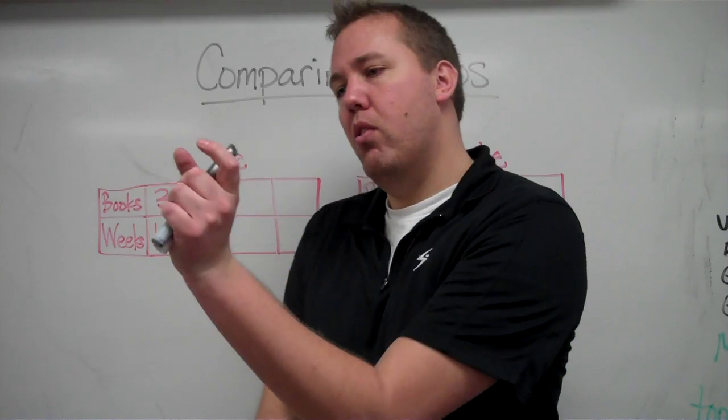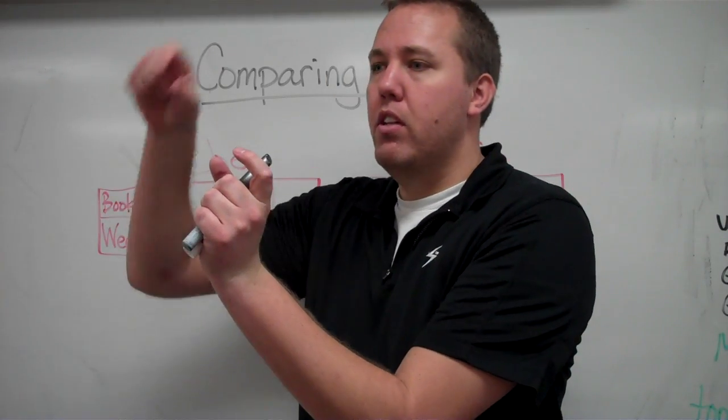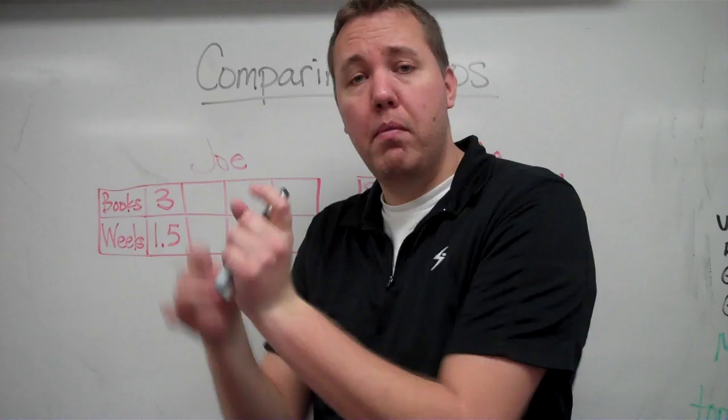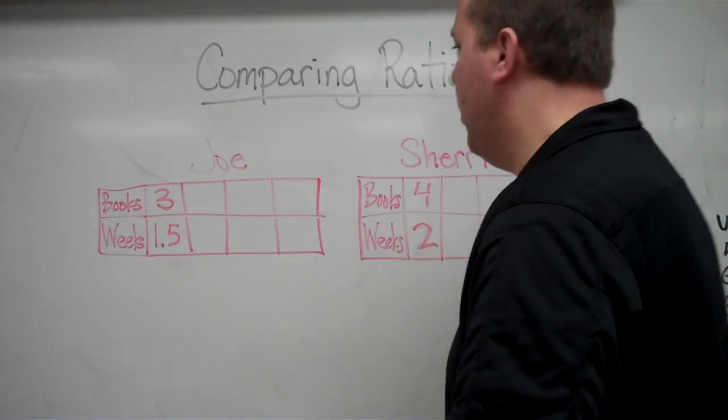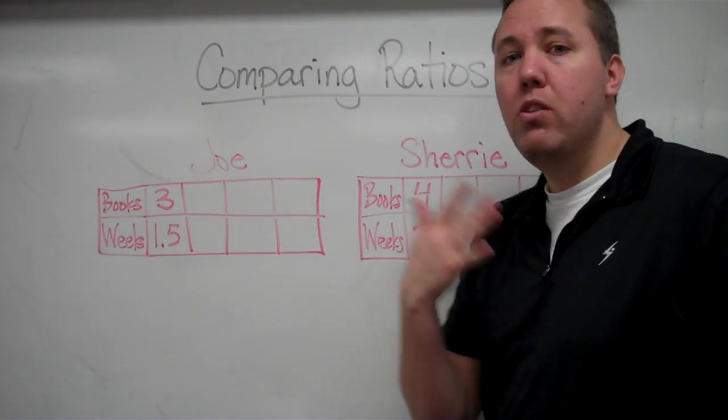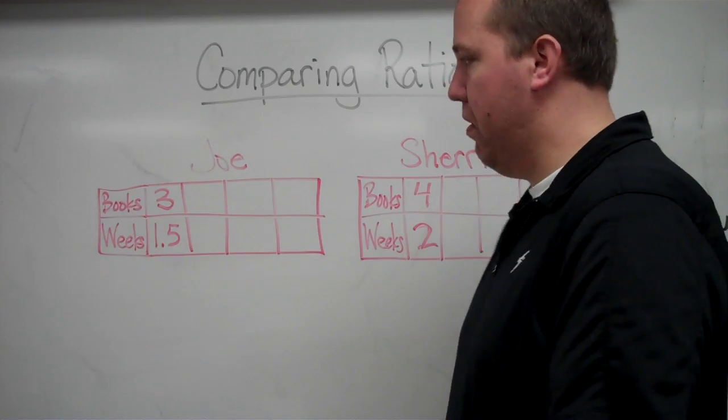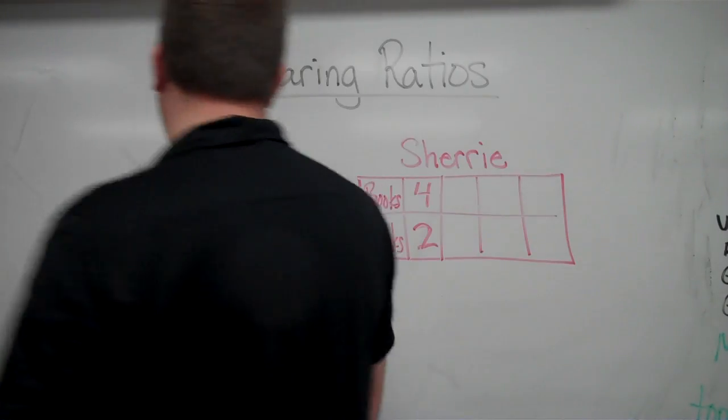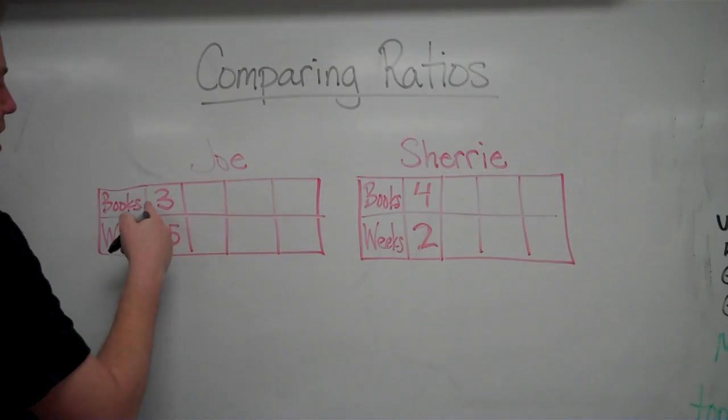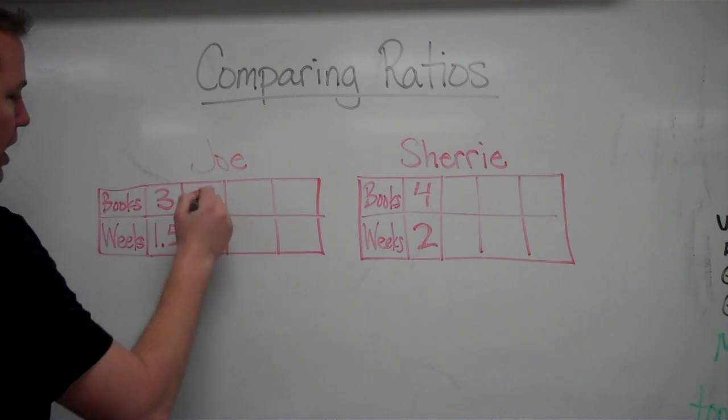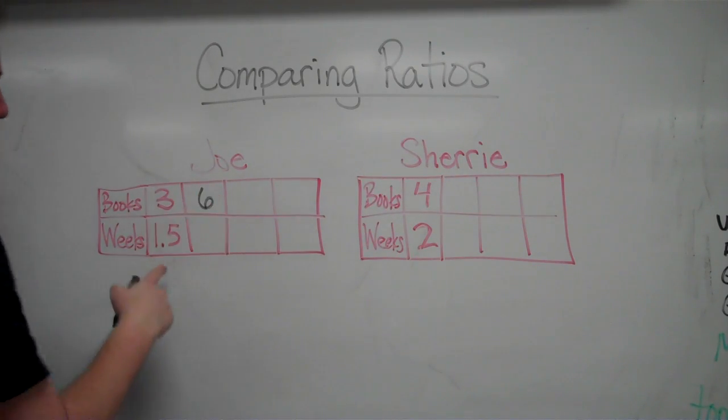Then we'll be able to say, in three weeks, Joe reads this many books, Sherry reads this many books, and make an apt comparison. Let's continue out this table using the rates that they have provided us. This is one and a half weeks, so let's continue on that table.